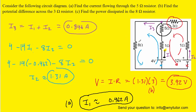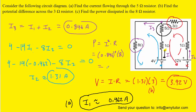For Part C, to find the power dissipated in the 8 ohm resistor, we recall that power equals current squared times resistance. The current flowing through the 8 ohm resistor is I3. Plugging in the value of I3, squaring it, and multiplying by 8 gives approximately 5.73 watts. That is the correct answer to Part C.